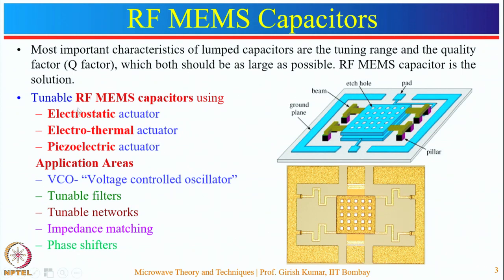Both capacitor types suffer from low power handling capability because for a high capacitance ratio the gap should be as close as possible, but it may result in RF breakdown. The next type uses a piezoelectric actuator, which provides linear tuning of the capacitor and low driving voltage.